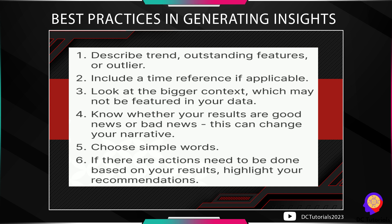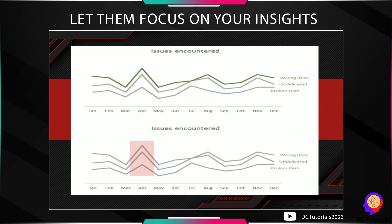Number three, look at the bigger context. If you know some relevant external information that is not featured in your data but helps contextualize the results, then you may add those — it can make your insights a lot stronger. For example, if we know that attendance for April was relatively low, we can add that as an insight so people can understand why there were more issues during that month. Be resourceful in picking other useful information.